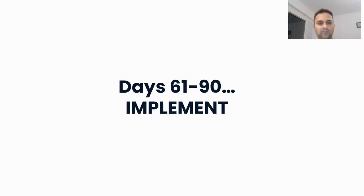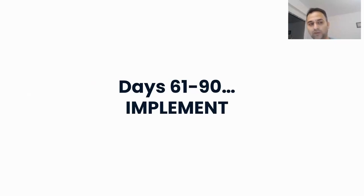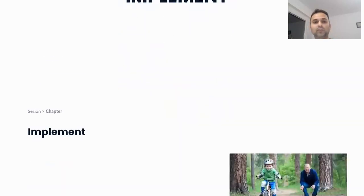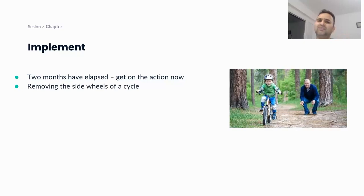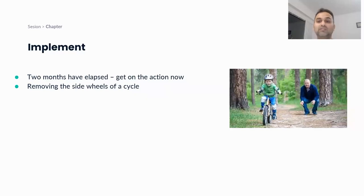After the experimentation and learnings from making mistakes and implementing things, the last 30 days — days 61 to 90 — are the implement phase. This is where you're considered ready. You've had one to two months of training, made your mistakes, fallen and gotten up. Now it's time to implement. I compare this stage to learning to ride a bicycle — this is the phase where you start riding without the side wheels.